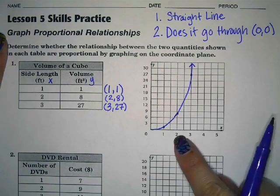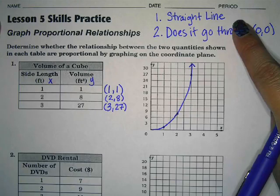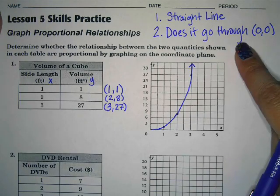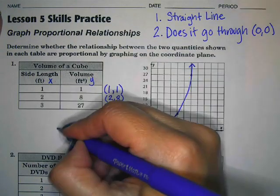But now the second part of this is I'm asking, is it a straight line? No, it's not. So because it's not a straight line, even if it goes through the point zero zero, like this one seems to do, it is not a proportional relationship. So no.